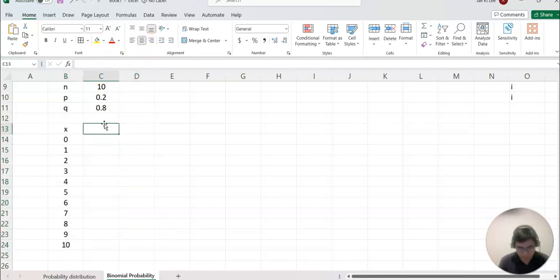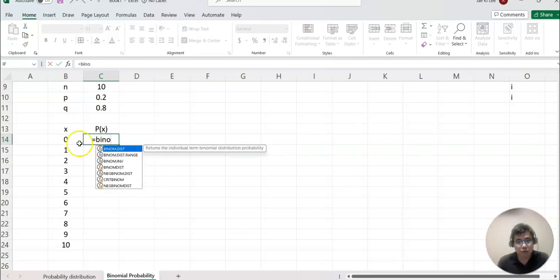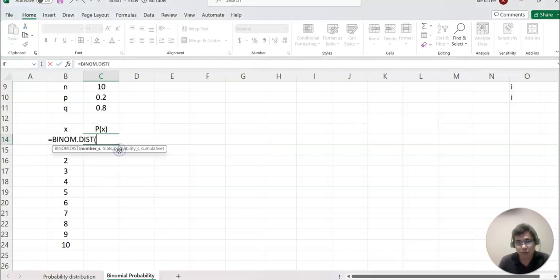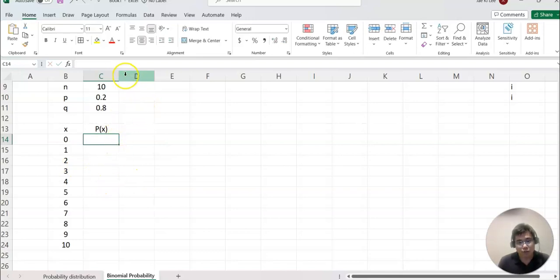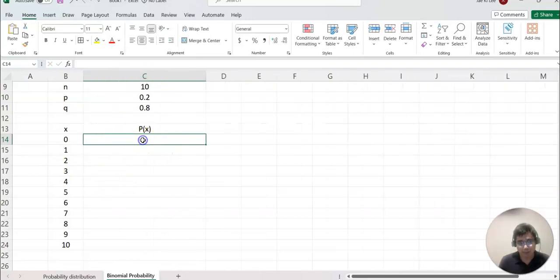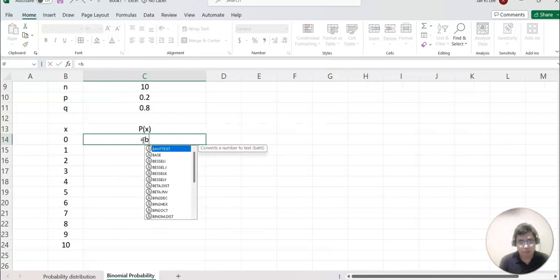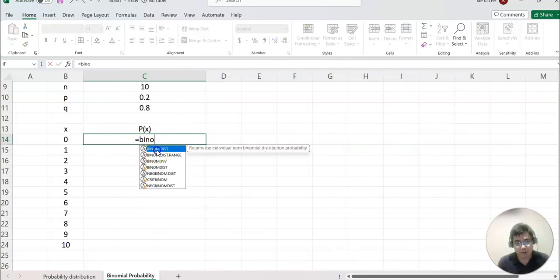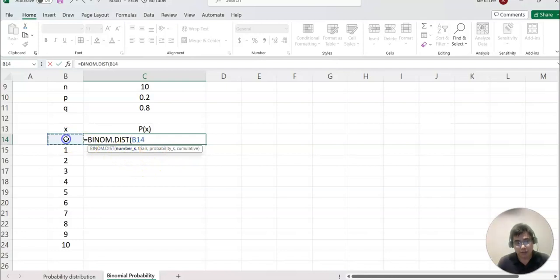Now probability value, that will be binomial. Please make equal sign and binomial, so B-I-N-O-M, then you see BINOM.DIST. That means binomial distribution, so click that. I'm going to make a little bigger. Equal BINOM, click there, and then number means this one, so click this.